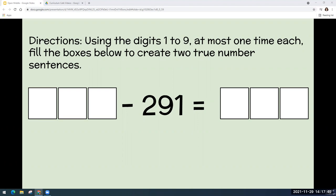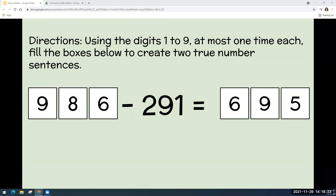Alright. Now this one was a little bit more difficult, right? So I'll kind of walk you through what I did. I started with the digits nine, eight and seven. So I did 987 minus 291. But once I did the math, I got 696 and realized that's not going to work. There's two sixes there and I'm only allowed to use the digits once each.